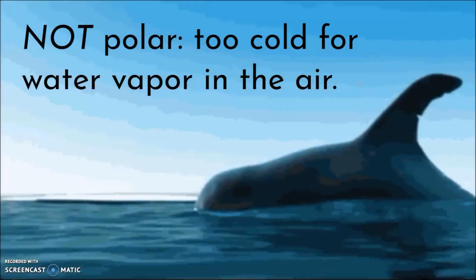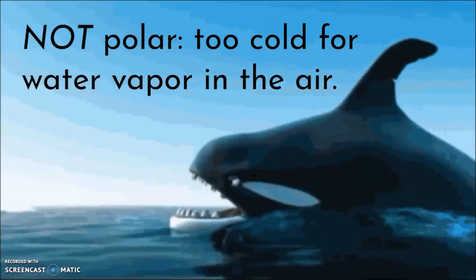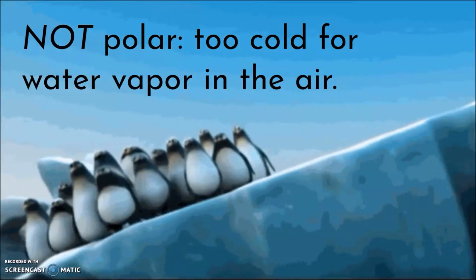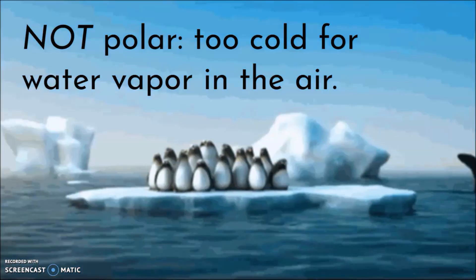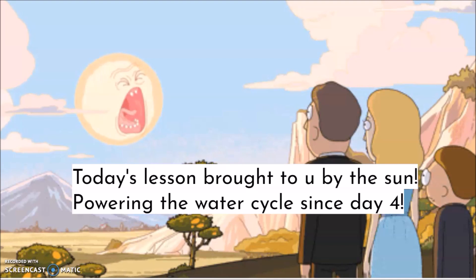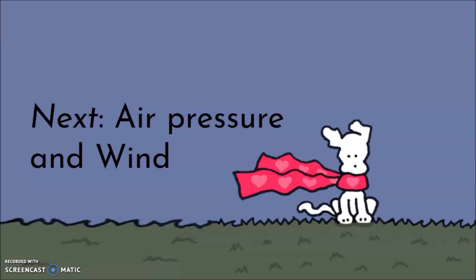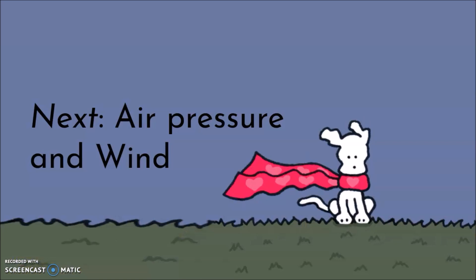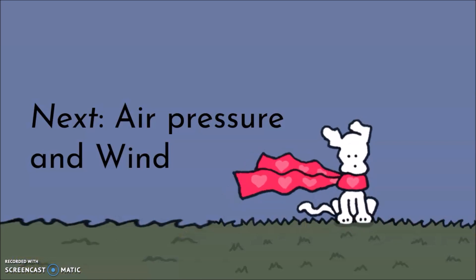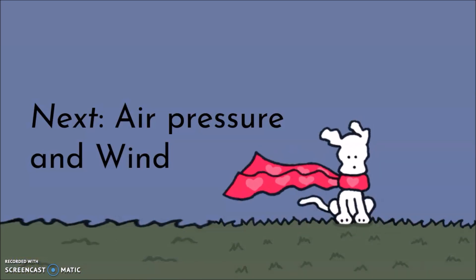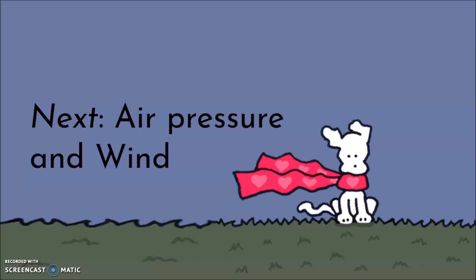Another area that's not going to get a lot of precipitation is the north and south poles — it is too cold there for water vapor to rise in the air. Today's lesson was brought to you by the sun. The entire water cycle is powered by the sun since day four of creation. Make sure to answer the questions in the form below and hit submit. Next, we'll talk about air pressure and wind.